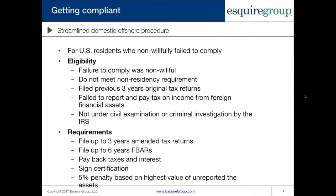The same requirement applies: you needed to fail to report and pay tax on income from a foreign financial asset — foreign wages do not count. If you're under examination or investigation you also cannot participate. The procedure requires amending those three past-due years of tax returns. For example, as of April 19th, the April filing deadline for U.S. residents has passed, so if you didn't file an extension, your 2016 return would be past due and could be included. You would then include 2016, 2015, and 2014, or adjust accordingly if your 2016 is still on extension.